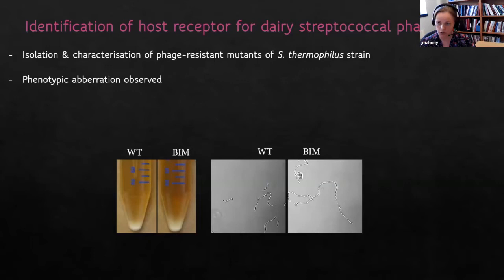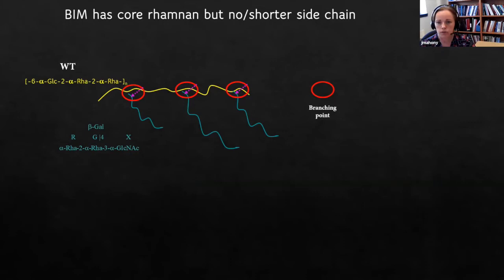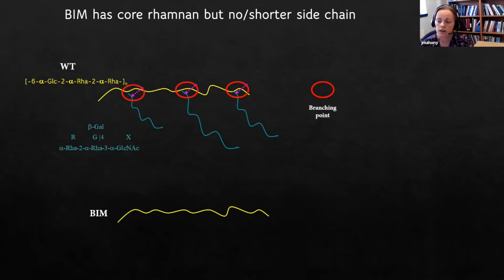In the background, we also silence the CRISPR in order to drive selection towards actual receptor mutations, and we verify by checking CRISPR array sequences. The gene cluster has a core rhamnan backbone structure indicated in yellow, and side chain structures of varying complexity attached to it. In the majority of cases, the bacteriophage insensitive mutants, or BIMs, retain the core rhamnan structure but either lose the side chain entirely or have it reduced in length.